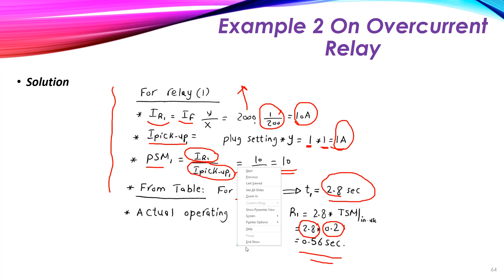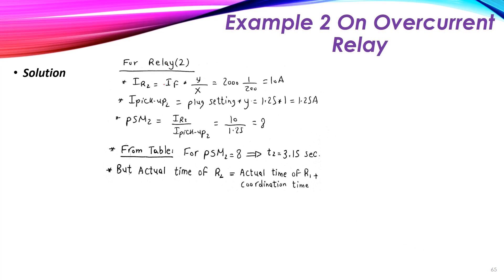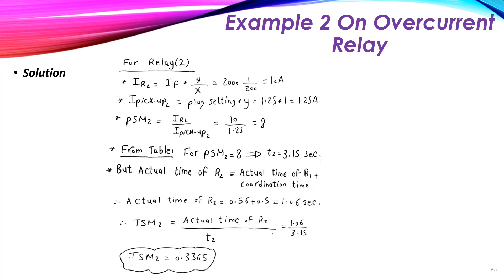What is the time of relay number two? Remember that the time gradient between the two relays is 0.5 seconds. The time of relay number two is equal to 0.56 seconds — the time of relay number one — plus 0.5 seconds, because that is the time margin between them. So the actual time of R2 is equal to 0.56 + 0.5, which equals 1.06 seconds. This is the first requirement.